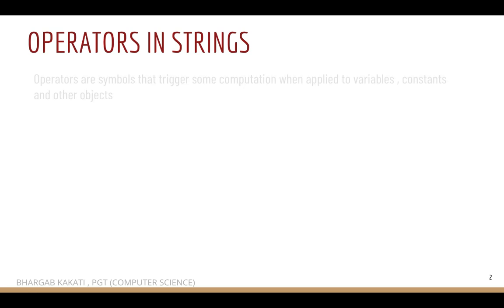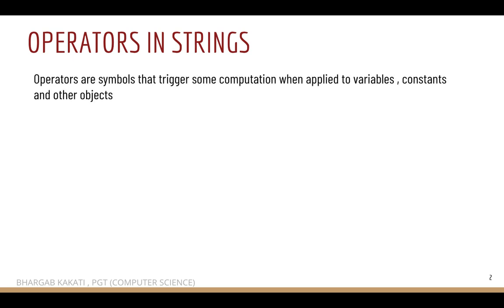Let us try to understand what operators are. Operators are symbols that trigger some computation when applied to variables, constants, and other objects. Symbols like plus, minus, multiplication, division, greater than, less than, etc. For example, if we apply plus to 5 and 6, it will give us a result of 11. These are symbols that trigger some computation when applied to certain variables, constants, or other Python objects.